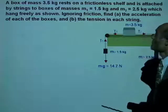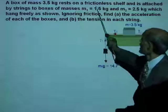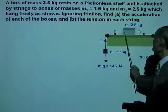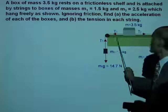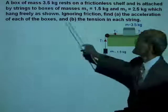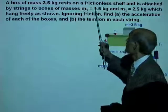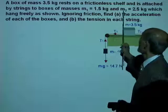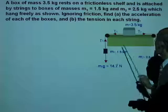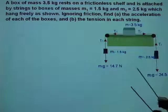A box of mass 3.5 kg rests on a frictionless shelf. This is the box of mass 3.5 kg resting on a frictionless shelf, and is attached by strings to masses M1 equal to 1.5 kg and M2 equal to 2.5 kg, which hang freely as is shown here.